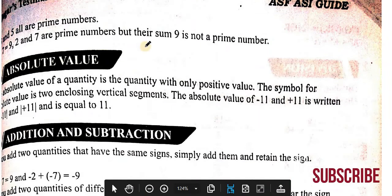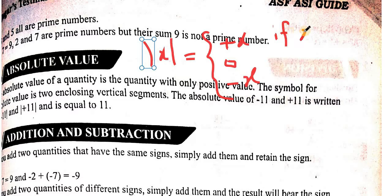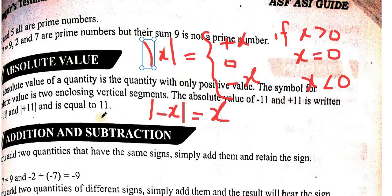Absolute value is defined as: absolute value of x equals x if x is greater than zero, equals zero if x equals zero, and equals negative x if x is less than zero. This is the formula for absolute value. Any number, minus x, will have absolute value equal to positive x.